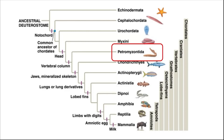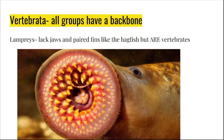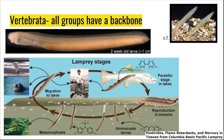The next group of craniates we'll discuss are the Petromyzontids. These are vertebrates. From here on out, all of the animals we'll discuss have a vertebral column. The Petromyzontids include the lampreys. Lampreys are also marine scavengers, and they look a lot like hagfish. They lack jaws and paired fins, but they are vertebrates. The life cycles of lampreys include a stage that enters streams and rivers. They reproduce in fresh water and continue their development in marine systems.